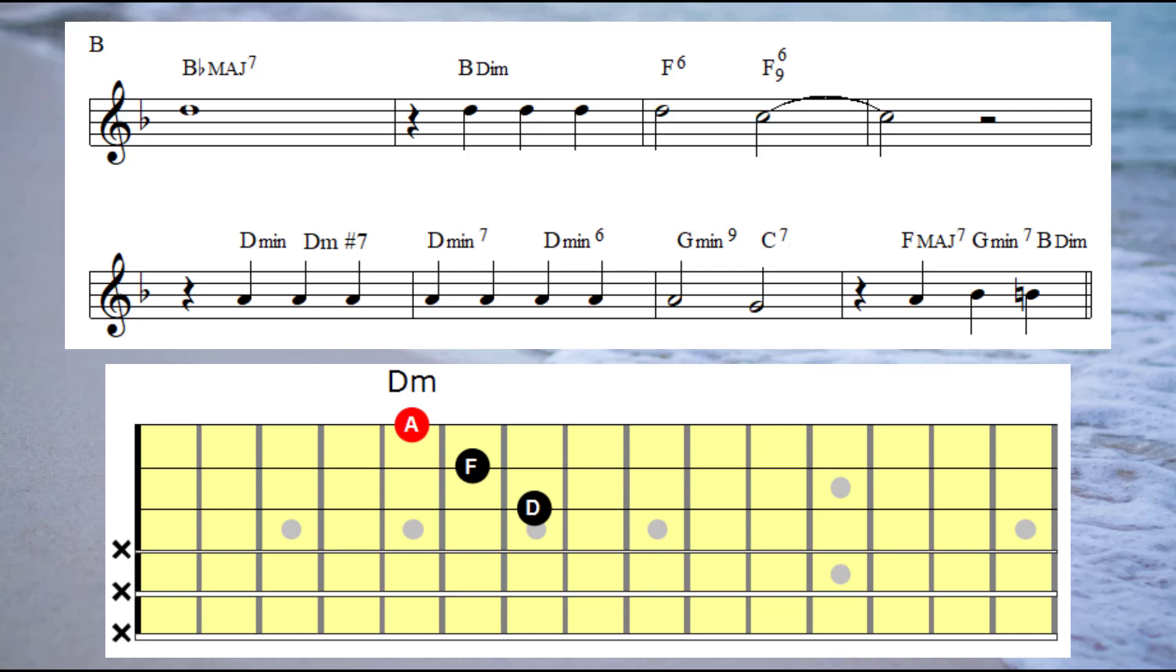Now if we take into consideration what the chords in the vanilla changes that we played earlier, if we consider what the chords would be that are played in the background behind these two bars, we would have a D minor in bar 5 and a G seventh in bar 6.